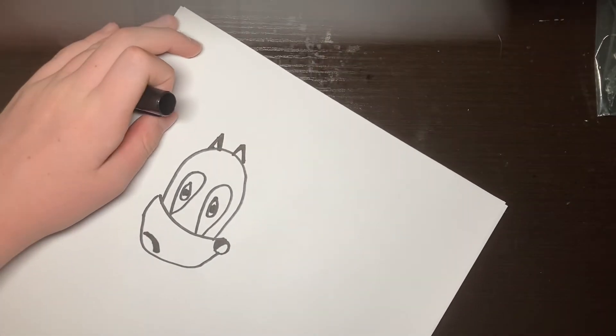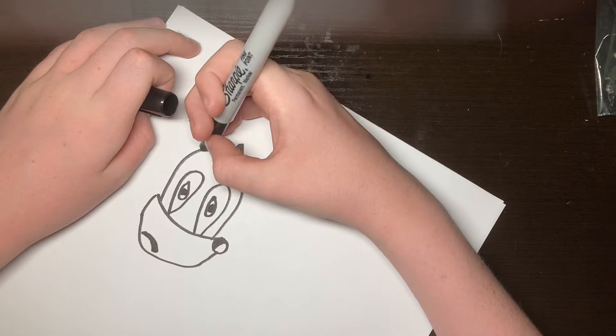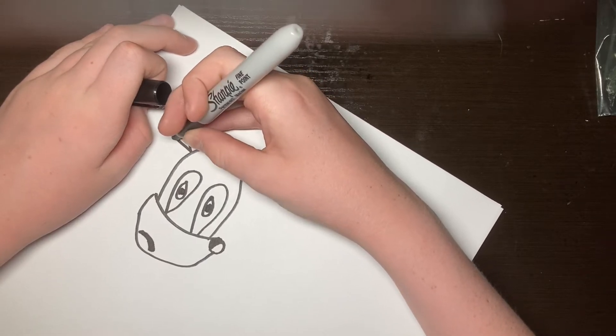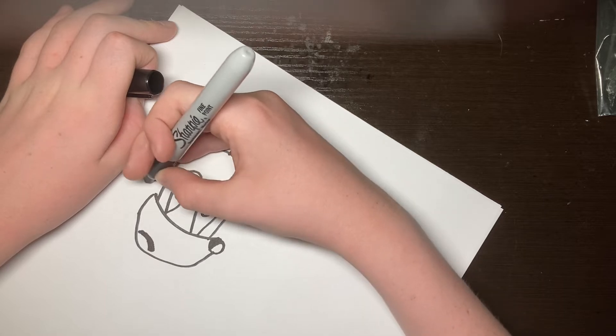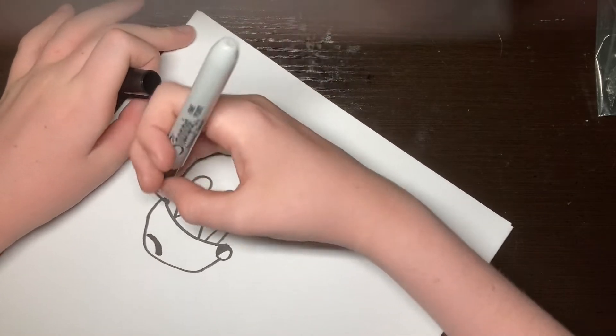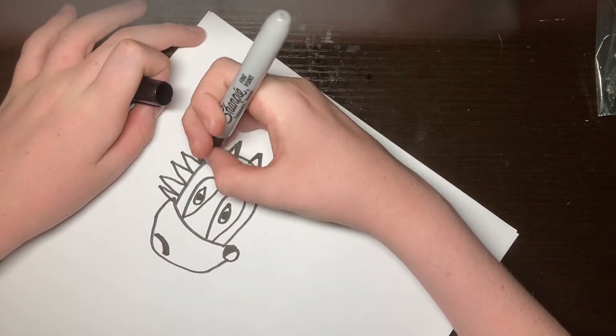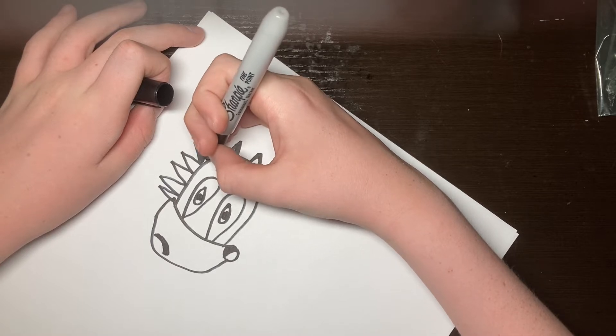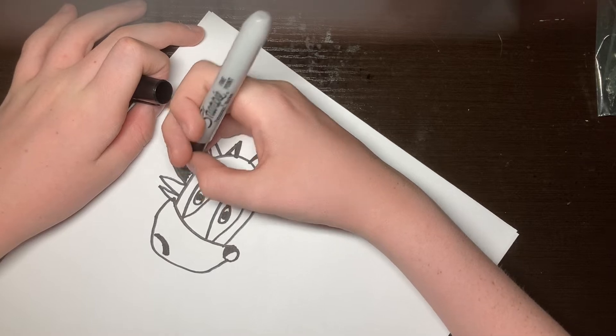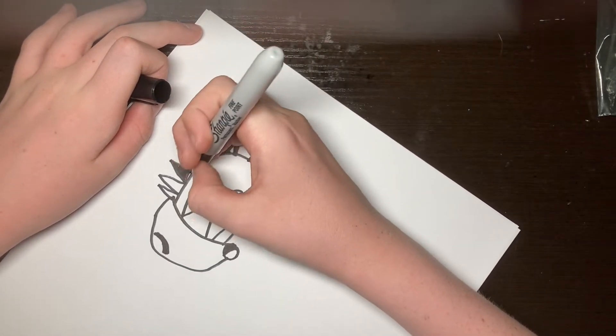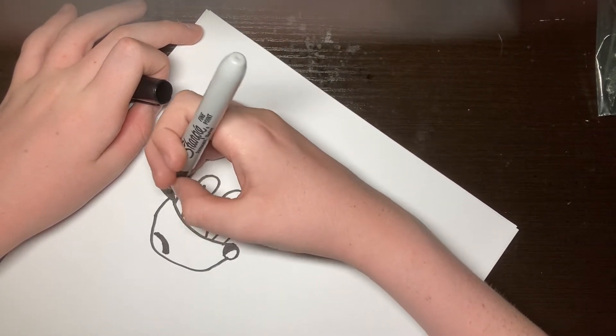And then you draw the spikes. Like this. Like that. And you're coloring this. And this. Like this. And then you color in the last one.